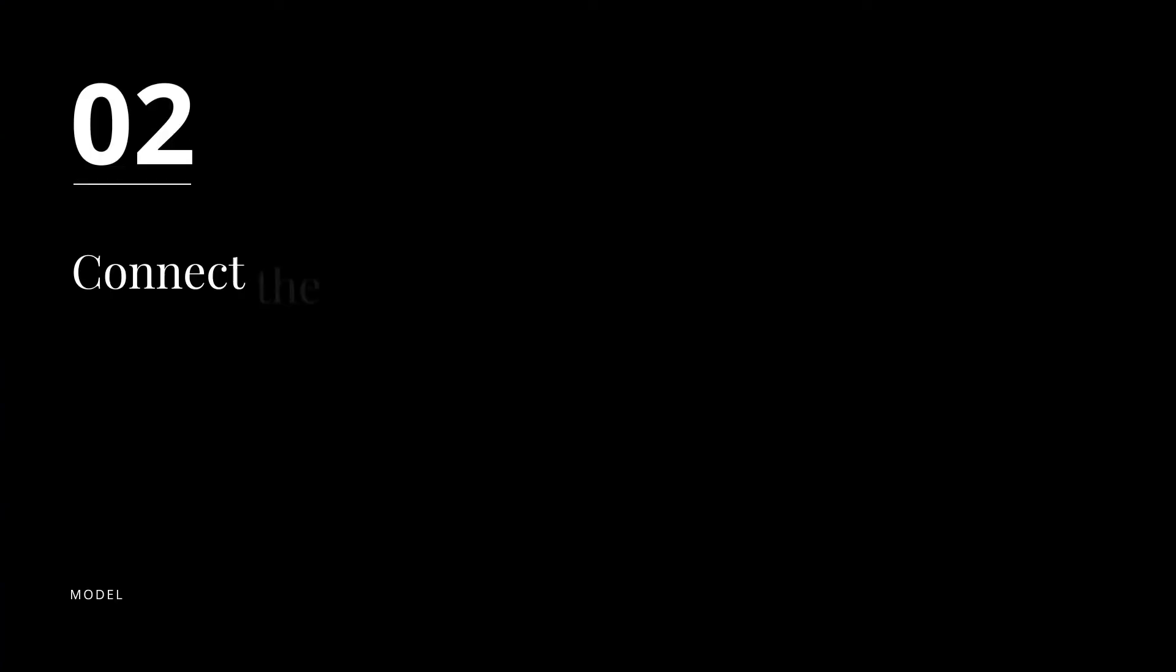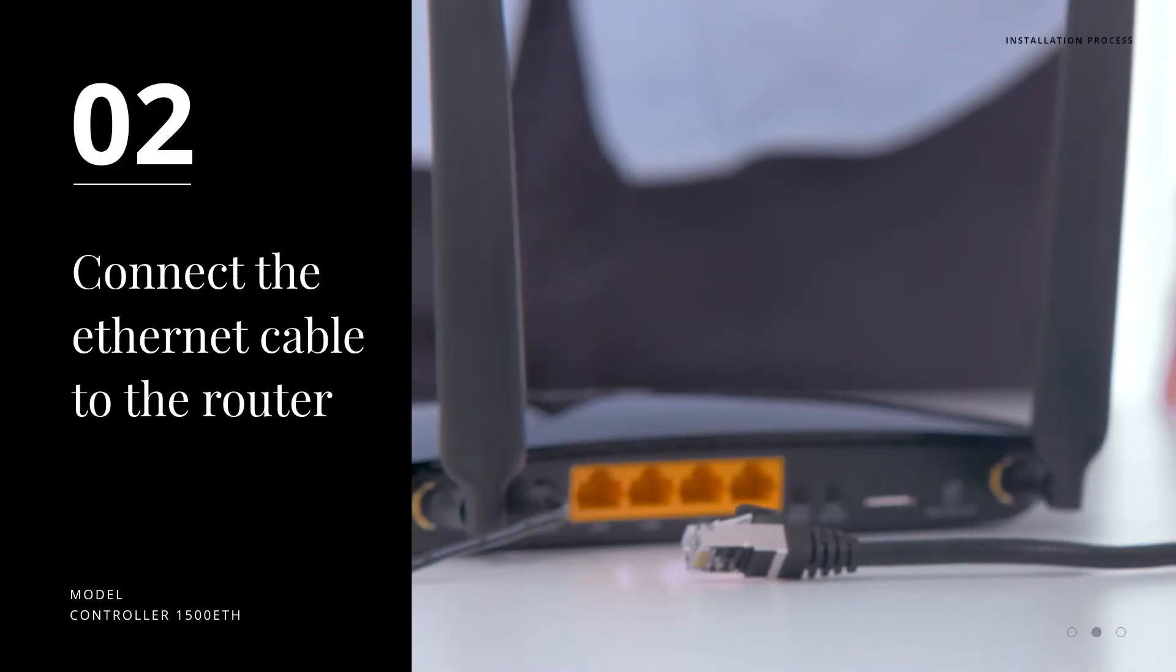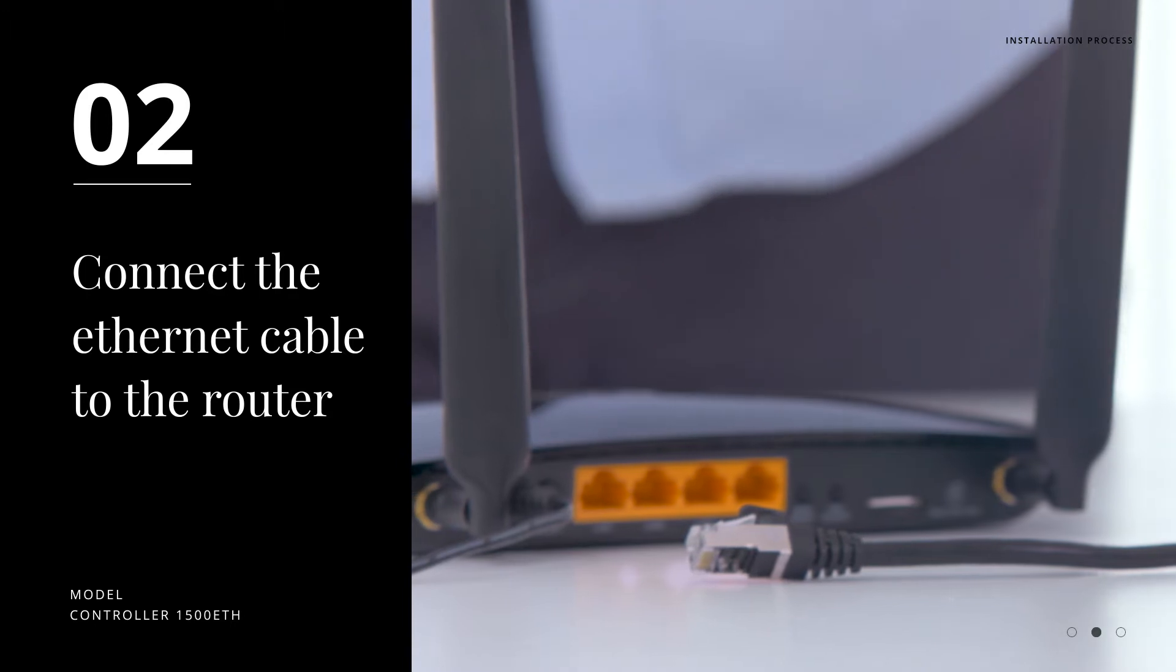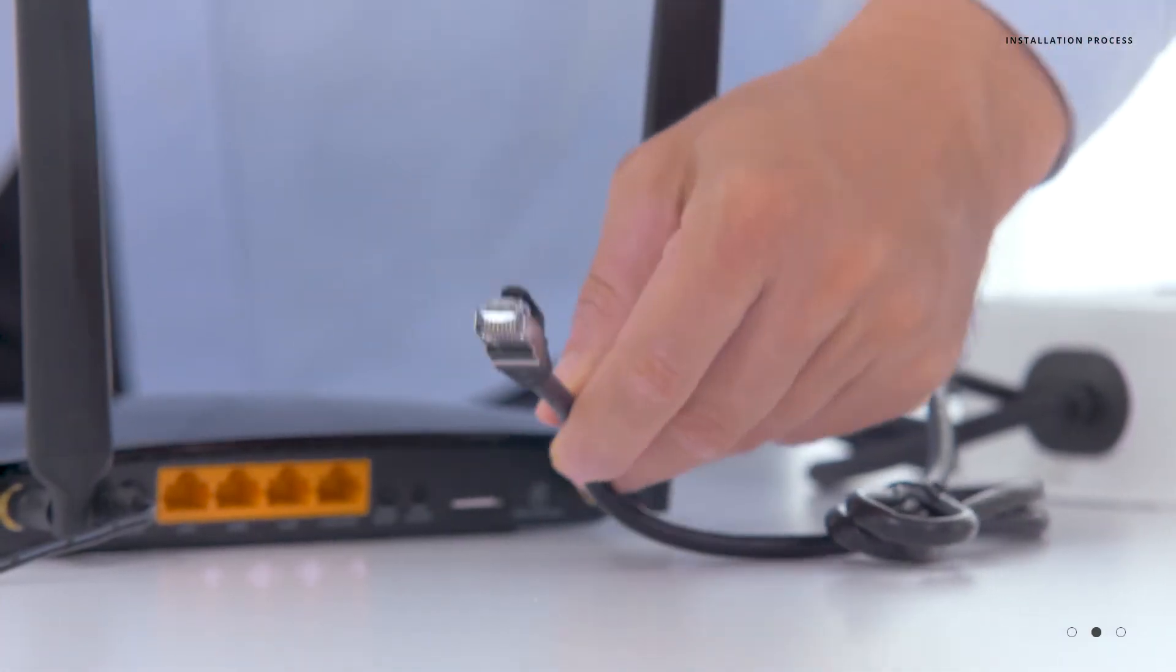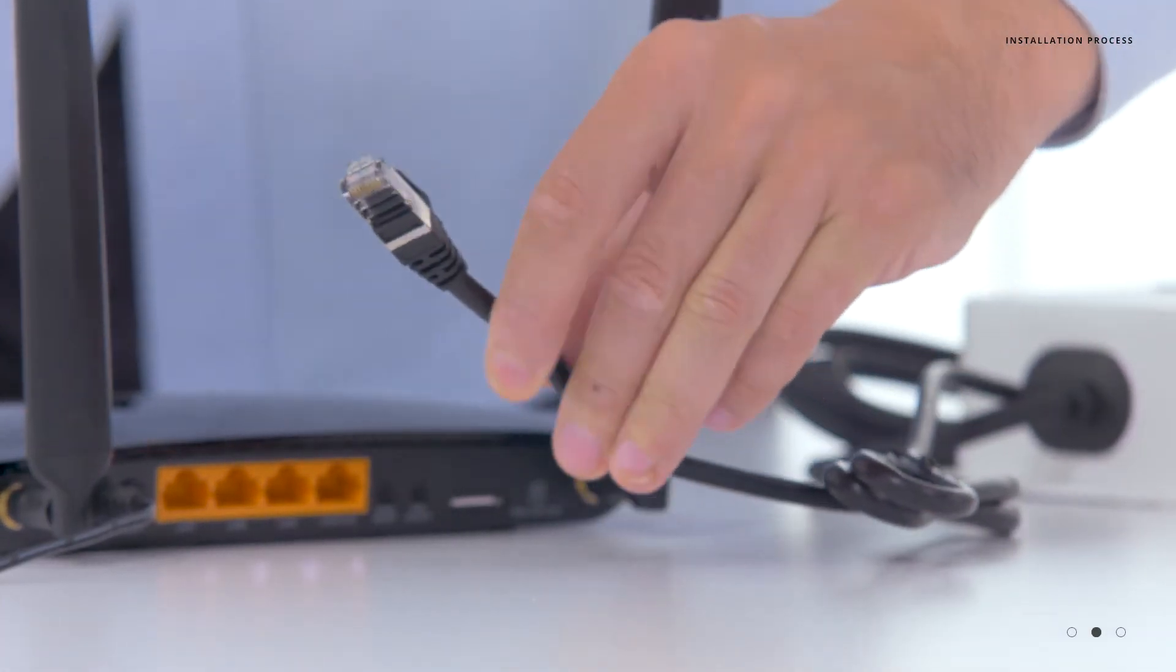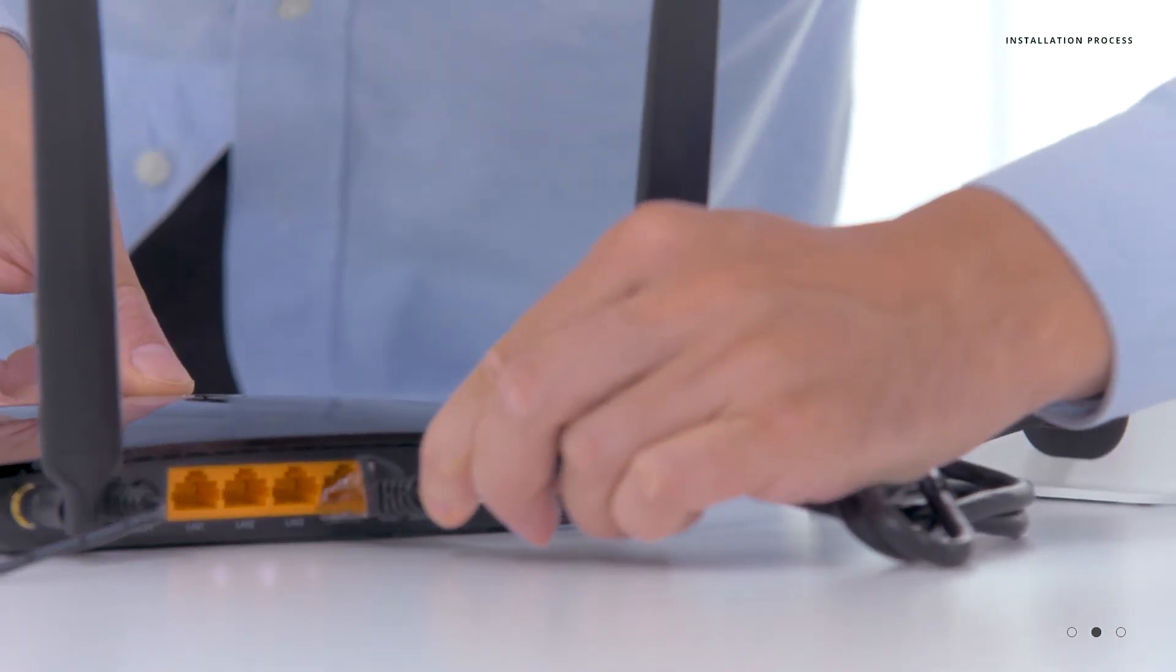Step 2: Connect the Ethernet cable to the router. In simple installations, take the provided Ethernet cable and plug it into one of the four ports available on the back of the wireless router.